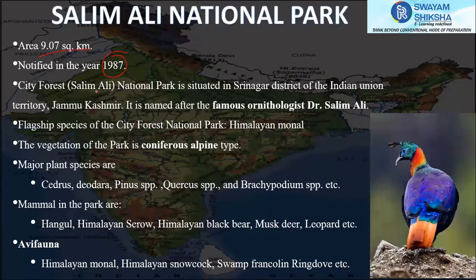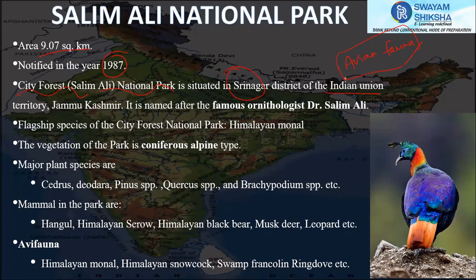Salim Ali National Park covers just 9.07 square kilometers and was notified in 1987. It is situated in the Srinagar district and is also known as the City Forest National Park, renowned for its avian fauna. The flagship species of this park is the Himalayan Monal — a beautiful bird with bright blues, greens, and reds.